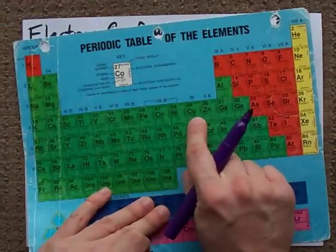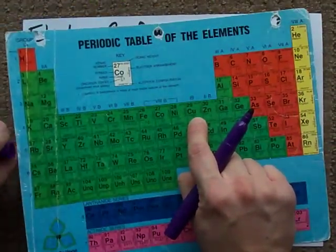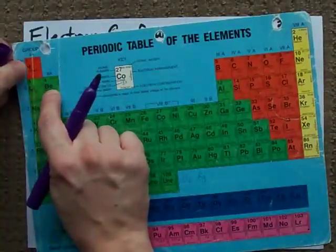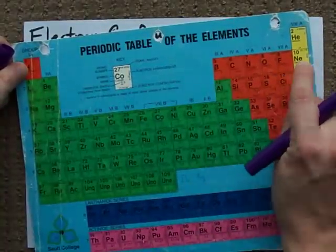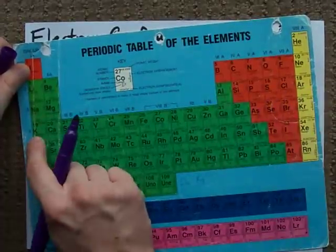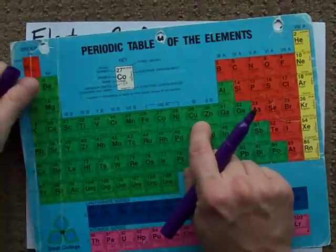Copper sits here in the periodic table. So the electron configuration of copper is 1s² 2s² 2p⁶ 3s² 3p⁶ 4s² 3d⁹.